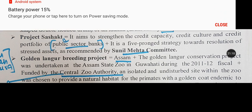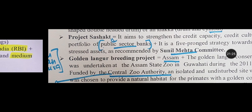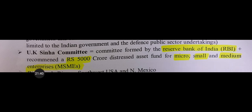Project Sashakt is a five-pronged strategy towards resolution of stressed assets of public sector banks — strengthening their credit capacity, credit culture, and credit portfolio. The Sunil Mehta Committee recommended implementing this project for stressed assets resolution. The UK Sinha Committee, formed by the Reserve Bank of India, recommended a ₹5,000 crore distressed asset fund for micro, small, and medium enterprises to address MSME sector stress.